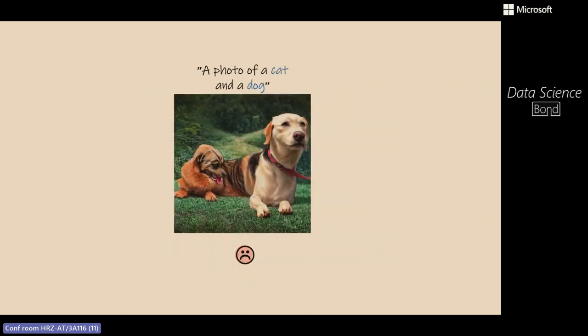Perhaps surprisingly, when we try to generate simple conjunctions of two subjects — such as a photo of a cat and a dog — the model often fails. Even with this simple example, at least 40% of the cases the model fails to generate both a dog and a cat in the same scene. The question we're asking is: is it an issue of expressiveness, where the model simply cannot generate two subjects, or is it neglect, where the model chooses to ignore parts of the prompt to make generation easier?